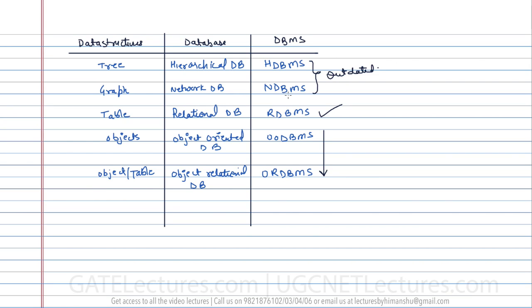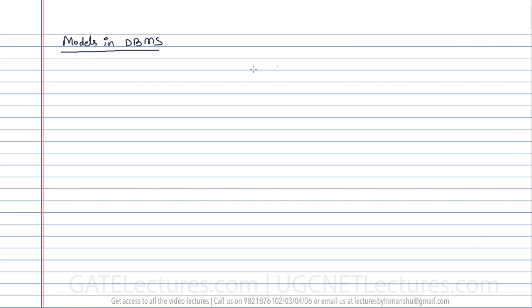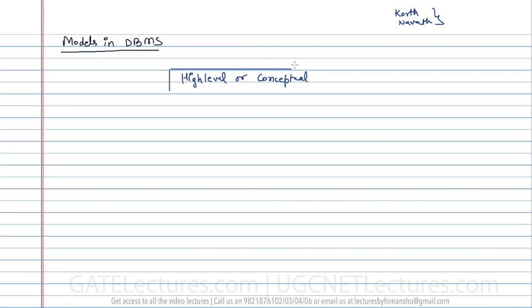There is something called models in the database. The recommended textbooks for this subject are Korth or Navathe — both are standard books for Database Management Systems and both are really good. Now, models in database management systems: a database can be divided into three types of models. Number one is the high-level model, also called the conceptual model.